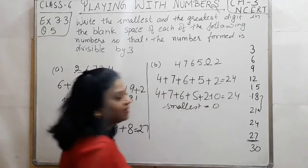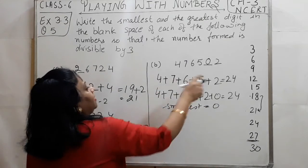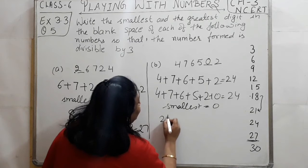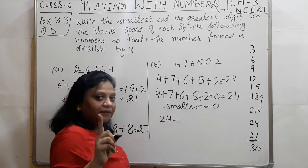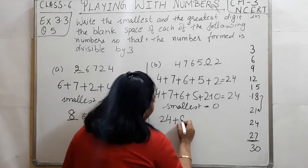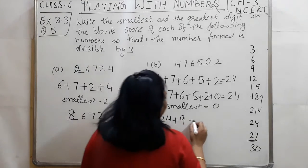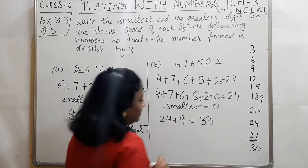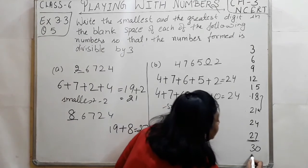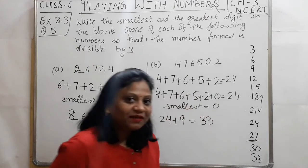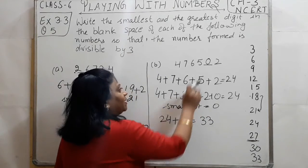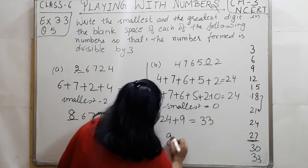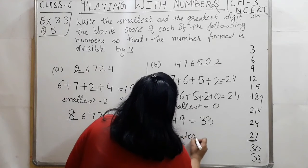Now for the greatest digit of the second number: the sum of the digits is 24. The greatest single digit is 9. Adding 9 to 24 gives 33, and 33 is divisible by 3. So I can place 9 in the blank. Therefore, the greatest digit here is 9.